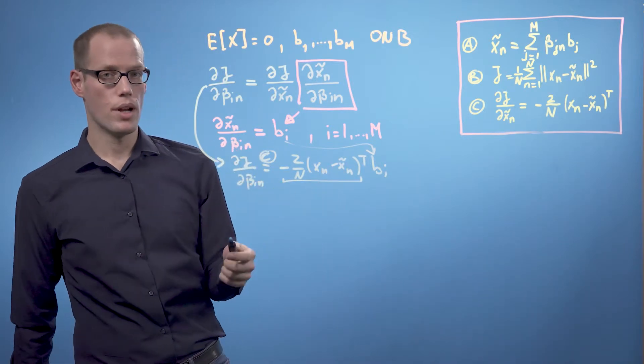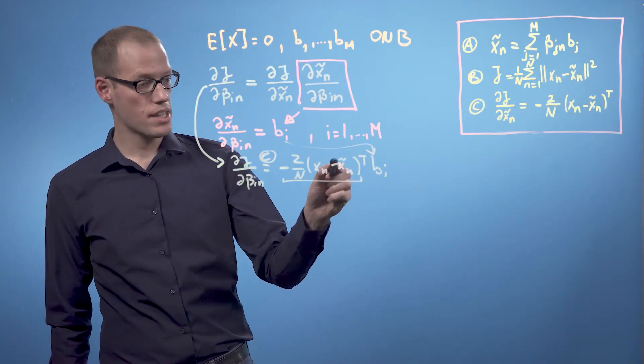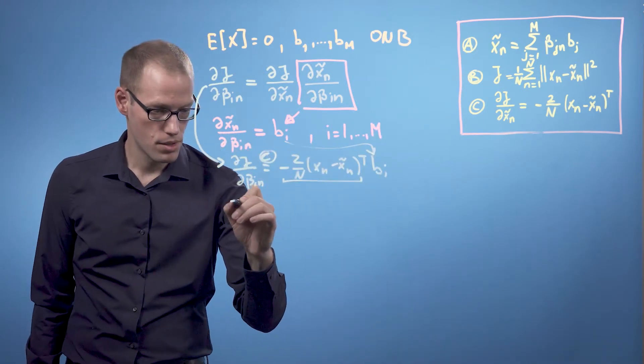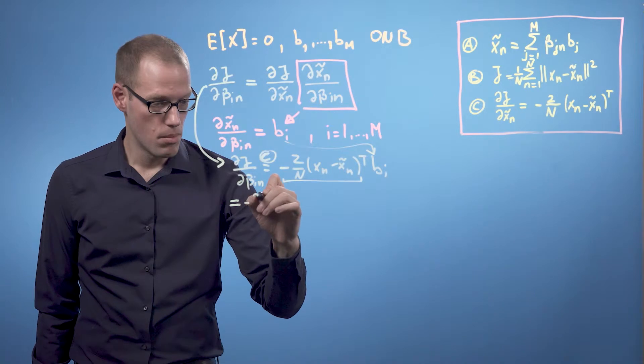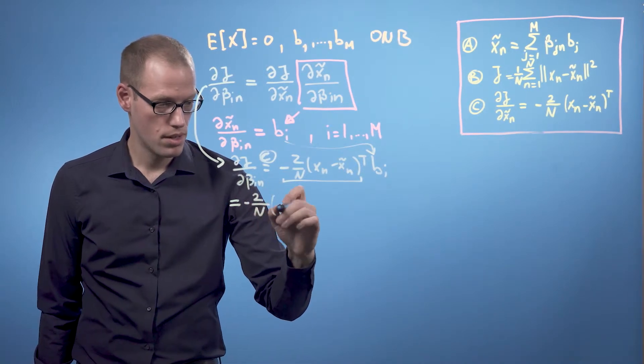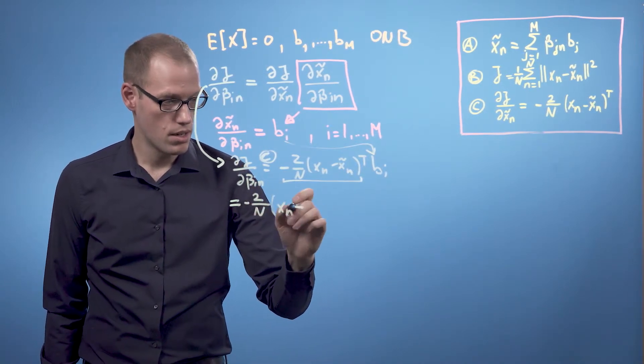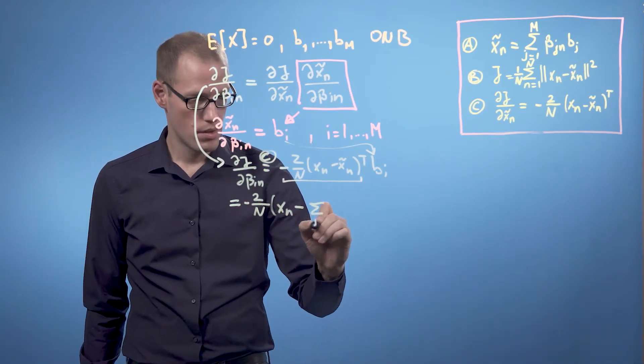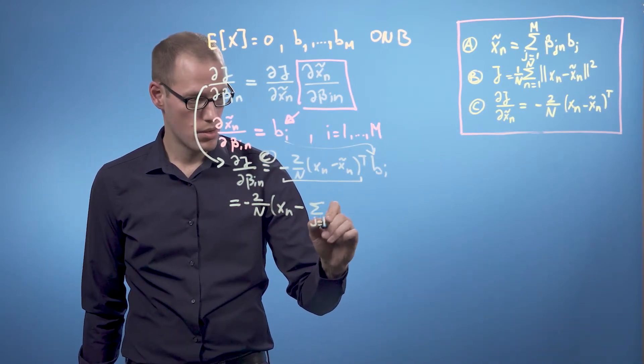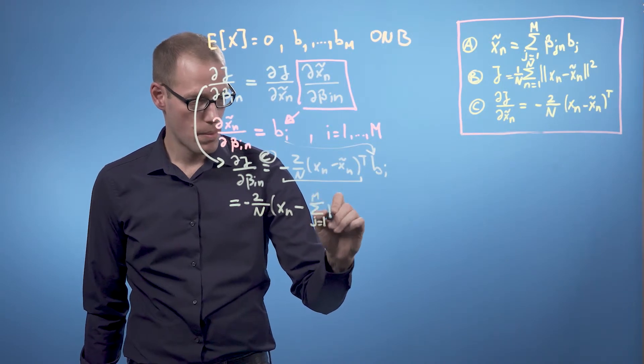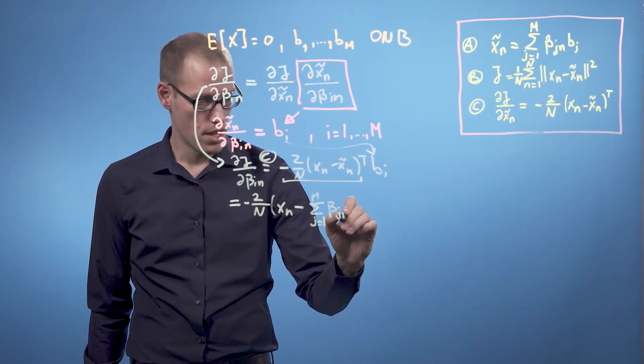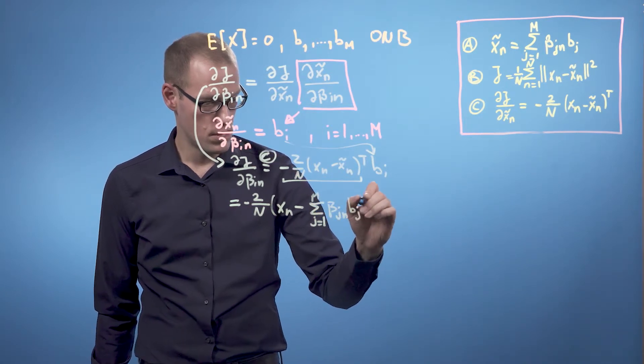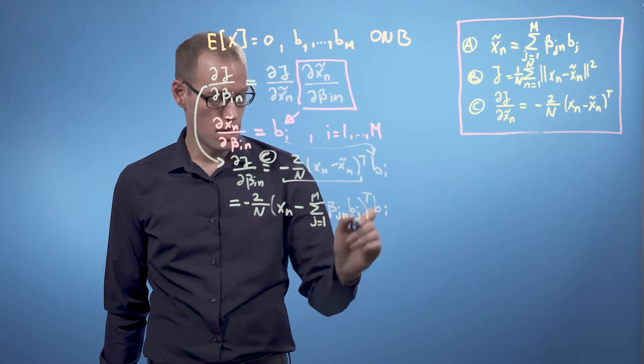And what we're going to do now is we are going to replace xn tilde using equation a. So we end up with minus 2 over n times xn minus the sum of j equals 1 to m bjn times bj transpose times bi.